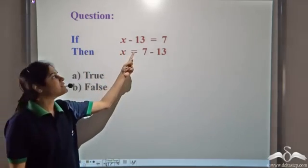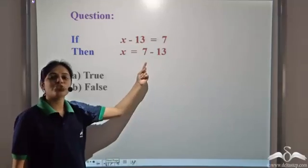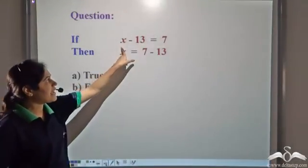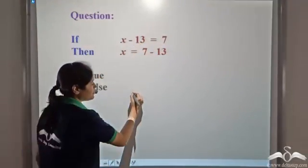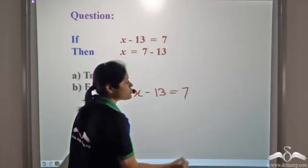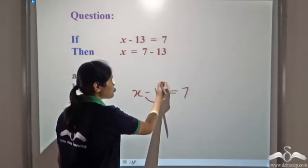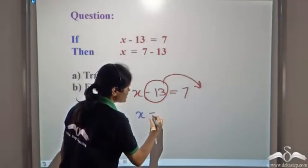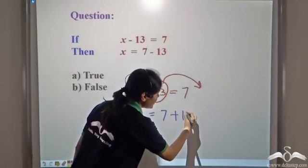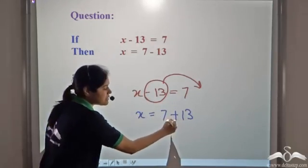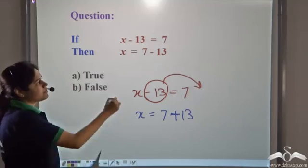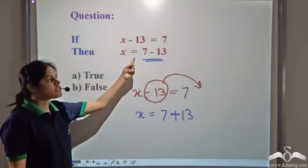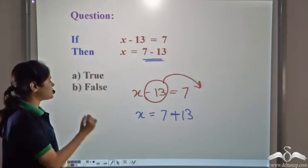If x minus 13 is equal to 7, then is x equal to 7 minus 13? True or false? If x minus 13 is equal to 7, we can transpose this minus 13 to the right hand side, and we have to reverse the sign, so minus becomes plus. It is 7 plus 13. Whereas the statement says 7 minus 13, so this is false.